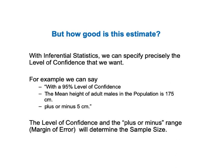But how good is this estimate? Since it's usually impossible to know the exact value of a population or process parameter, one might think we could never know with 100% accuracy if our sample's estimate is accurate, or even close. But through inferential statistics, we can specify precisely the level of confidence that we need. For example, let's say we measured the height of a sample of adult males and calculated the mean as 175 centimeters.